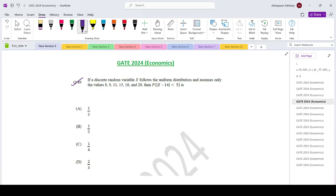If a discrete random variable x follows a uniform distribution and assumes only values 8, 9, 11, 15, 18 and 20, then what is the probability of mod of x minus 14 less than equals to 5?